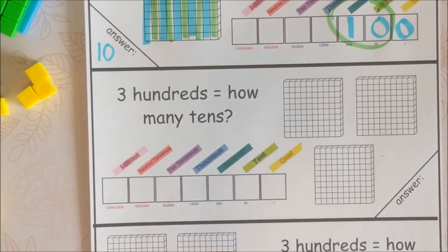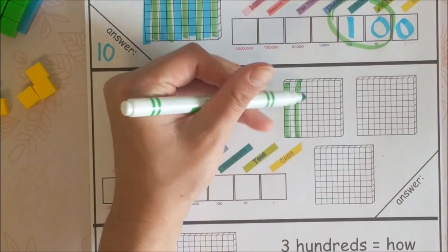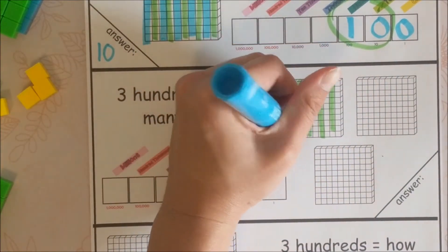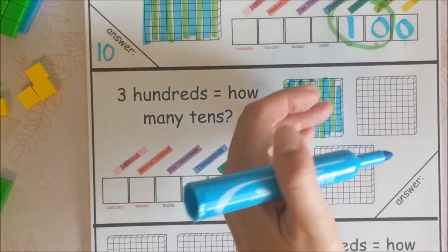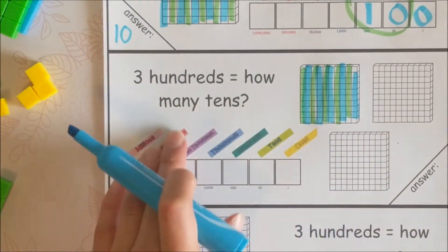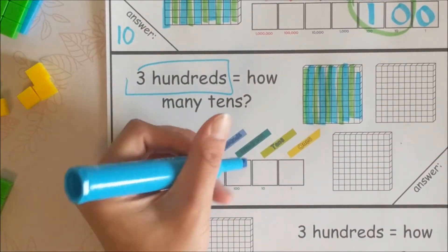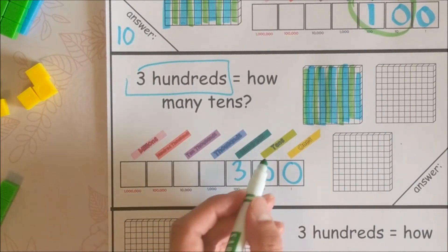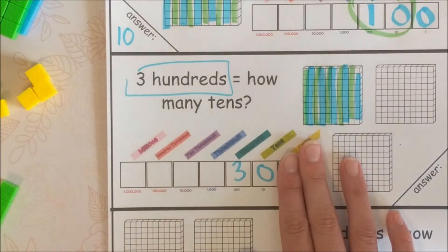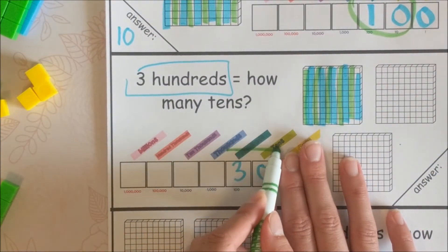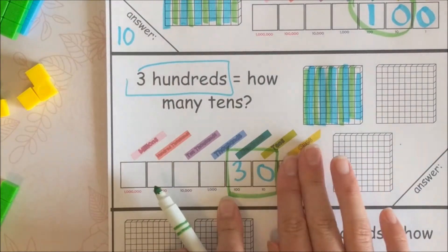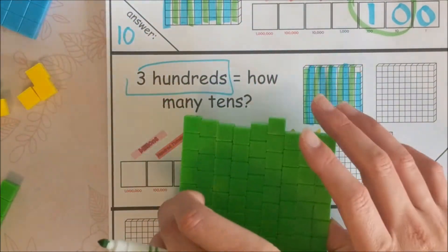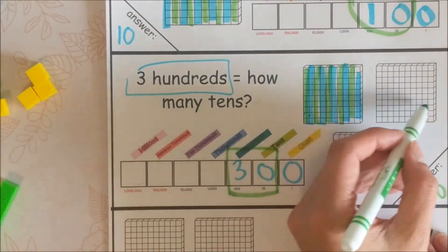Three hundreds is how many tens? You can stripe the grid and count all the rods individually — it's asking how many of these rods you'd need to make a hundred, then another hundred, then another. But let's use the place value chart: put 300 in. It's asking tens, so go down to the tens place, ignore everything after it, and circle. The answer is 30. If you counted each stripe, you'd get 30, and 30 tens make three hundreds.